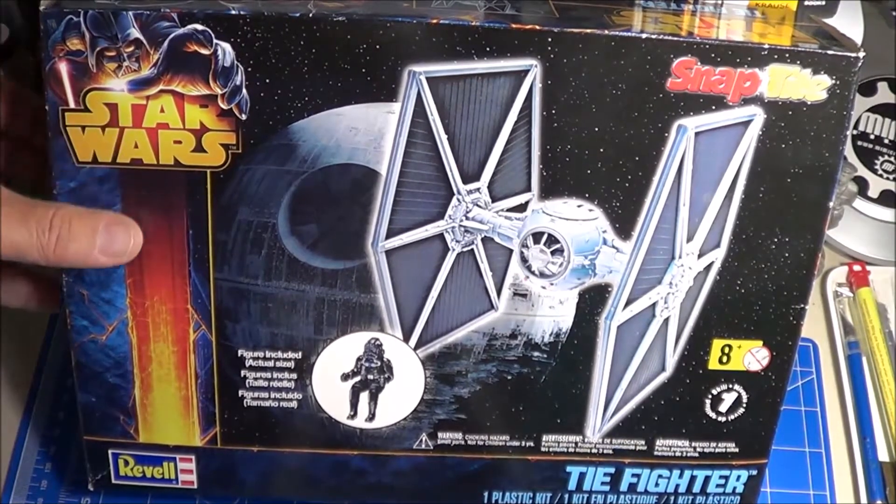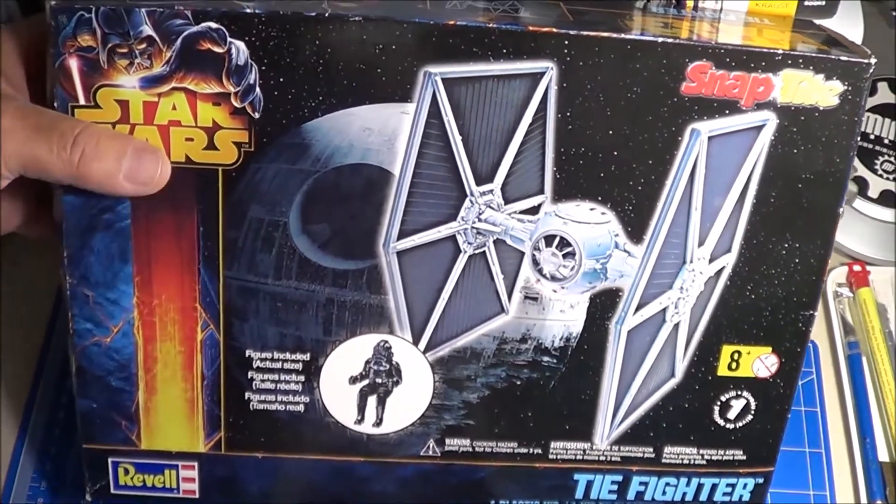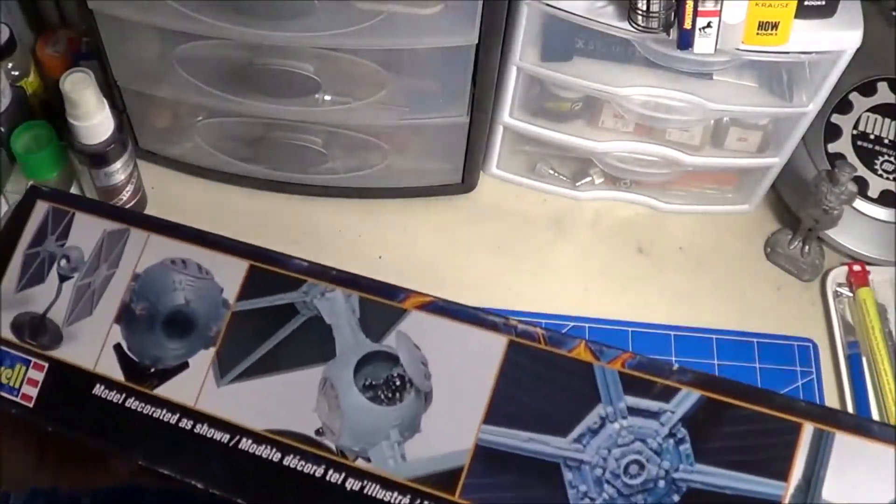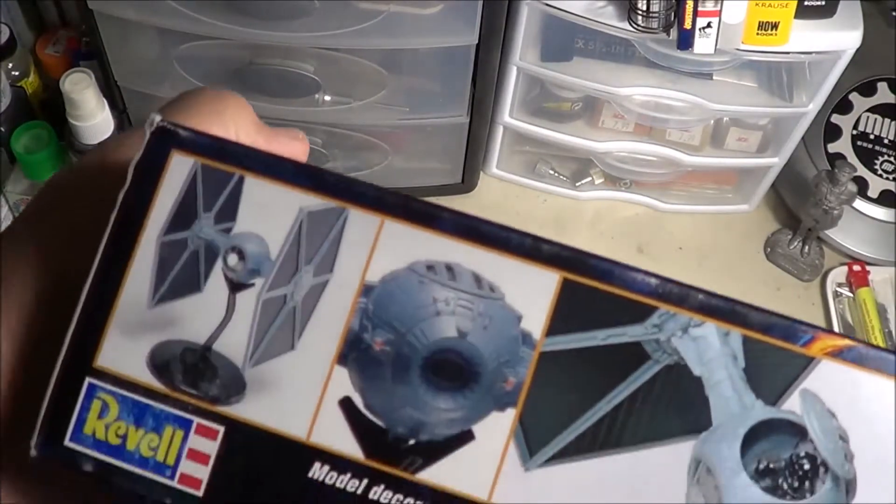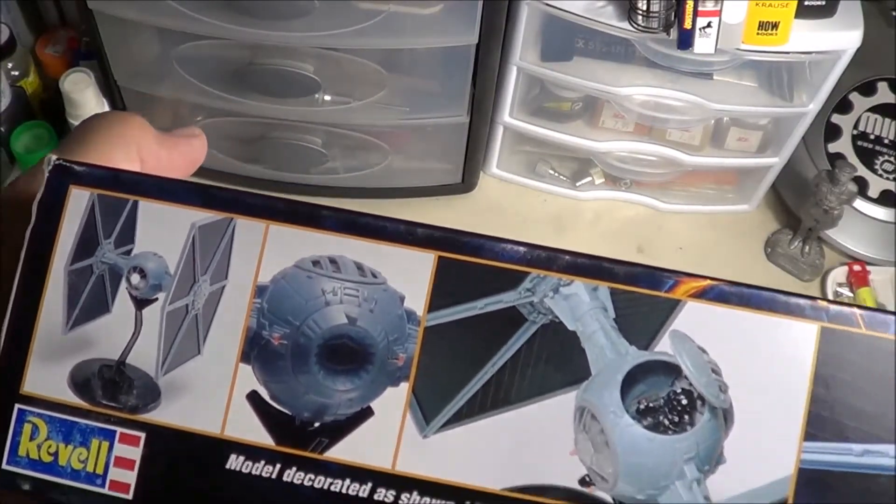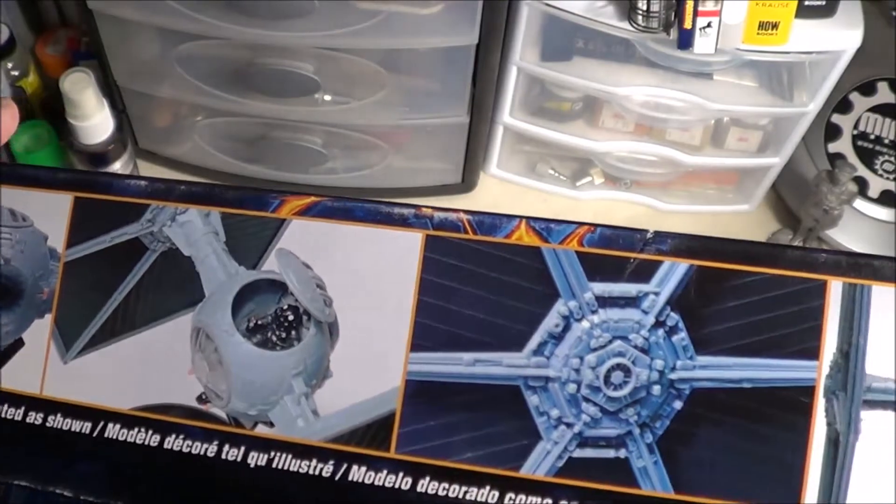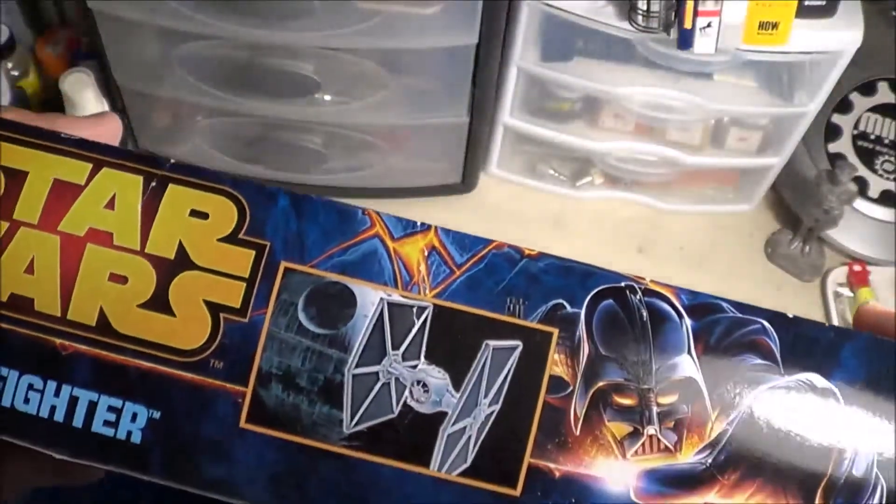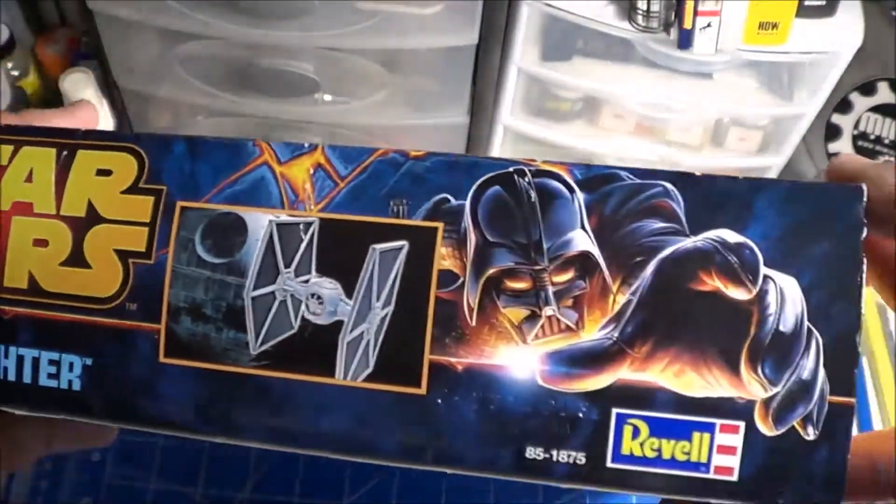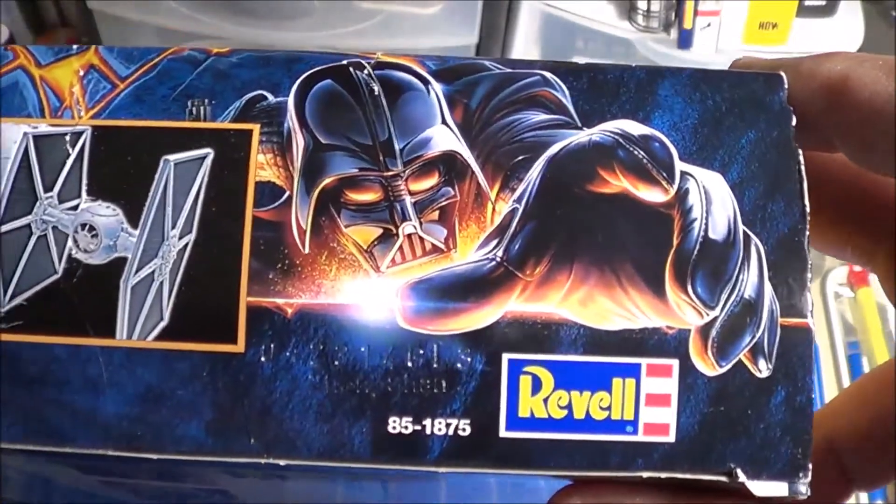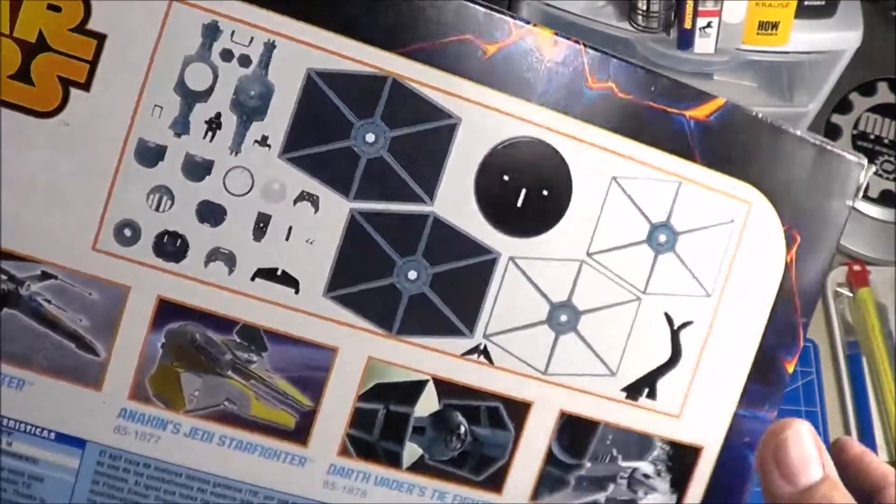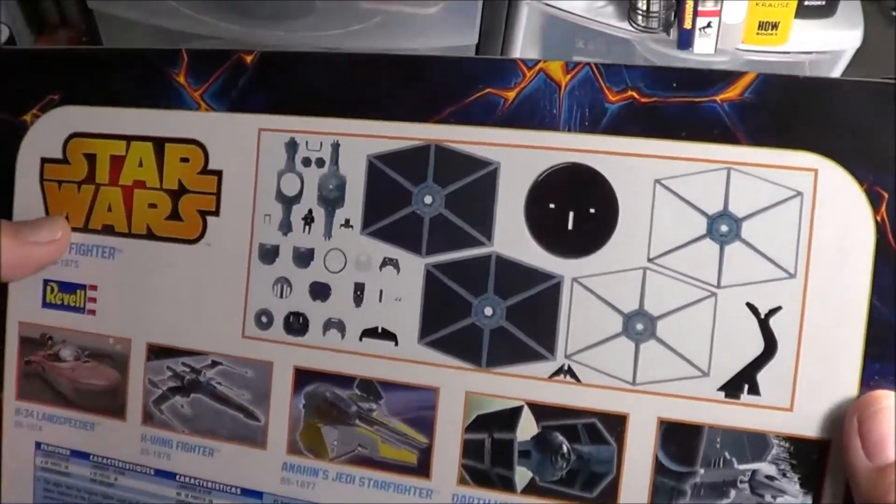This is a snap type kit. We'll look at the box art. Basically some real photographs of the model kit itself, so it is a pretty large kit and it really has some very nice details for what you're getting. Here's the side box, kit number 85-1875. These are readily available at Walmart too.